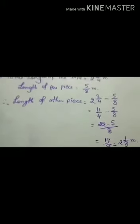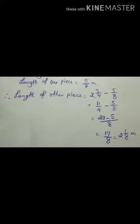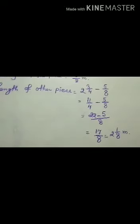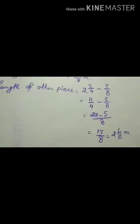So, you have to change the mixed fraction to improper: 11 by 4 minus 5 by 8. So, 22 minus 5 by 8. So, 17 by 8 is equal to 2 and 1 by 8 meter.